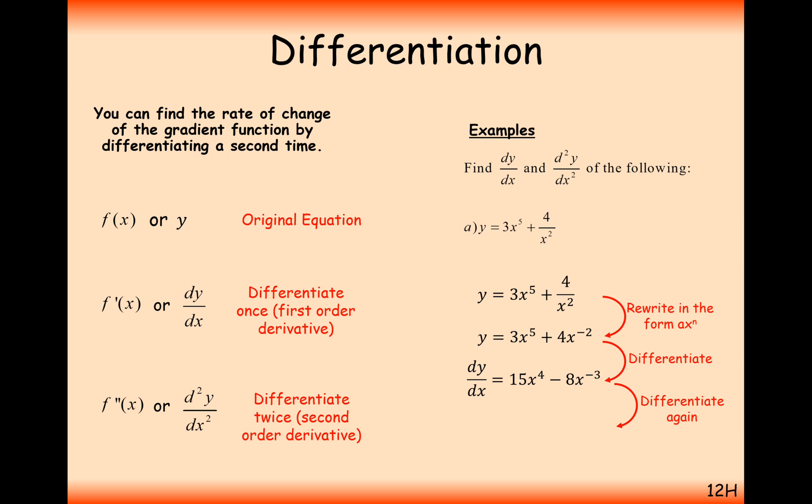Then do it again. The second derivative is going to be 60x cubed plus 24x to the minus 4. And that's all there is to it.